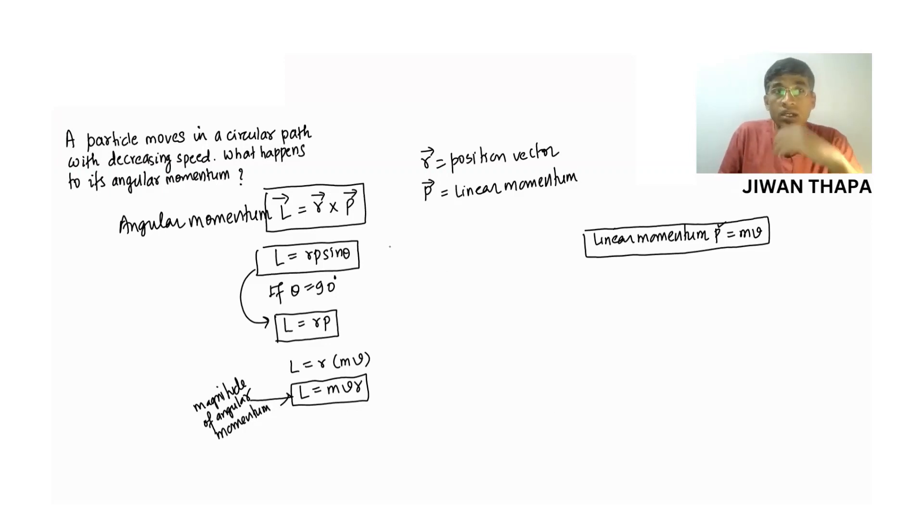Now, from the question, a particle moves in a circular path with decreasing speed.